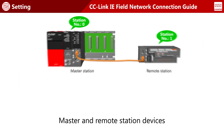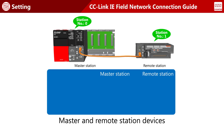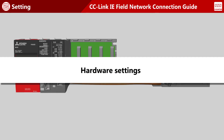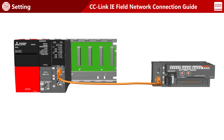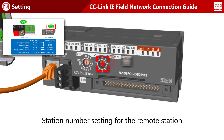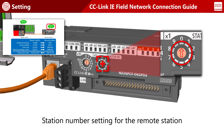Corresponding devices are assigned so that the master and remote stations can exchange data. The procedure for hardware settings is described. Station numbers for remote stations are set using the switch on the front of the module. The remote station is station number one, so set the station number to one using the single digit switch.